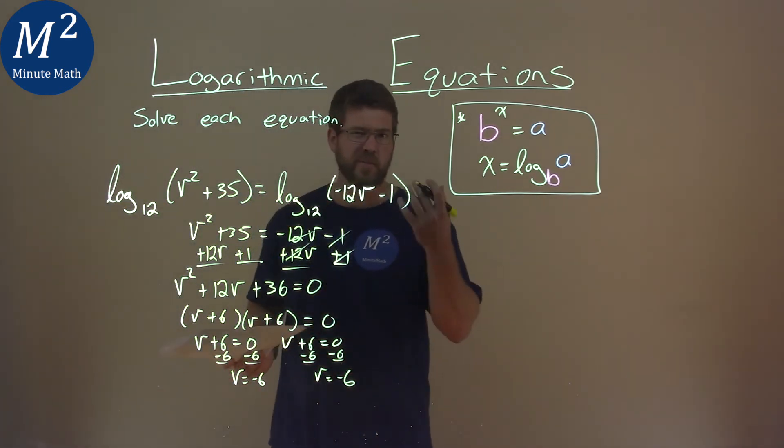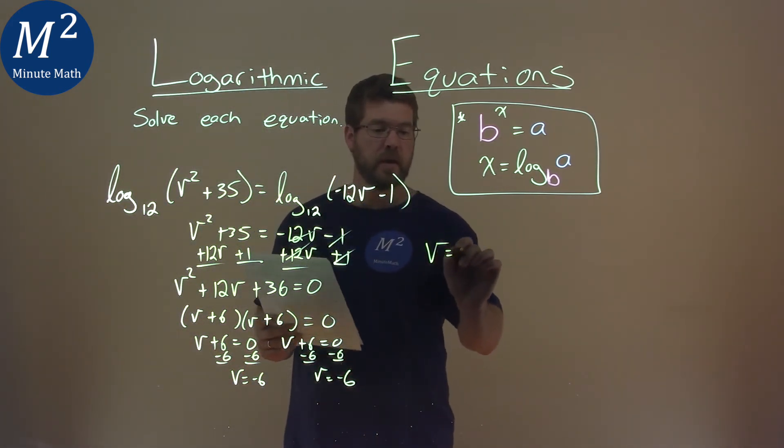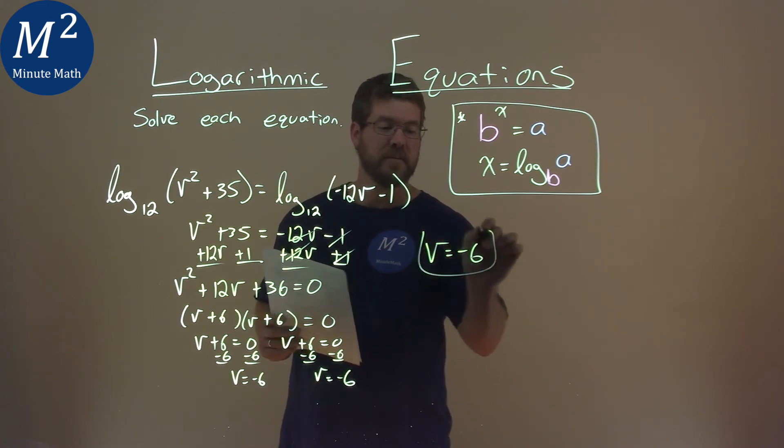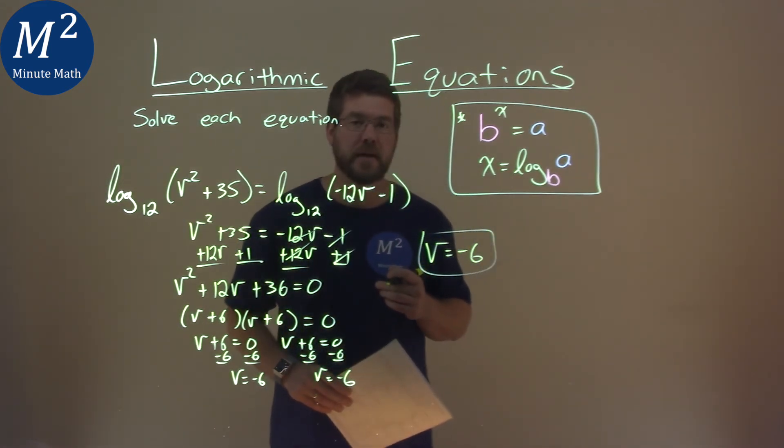But we don't need to write the answer twice, we just need to write it one time. And so our final answer here is just pretty simple, as v equals negative 6.